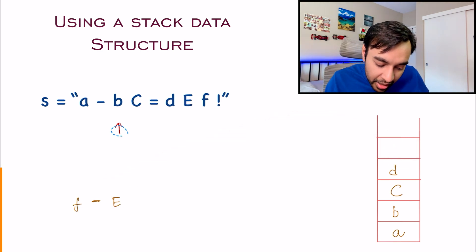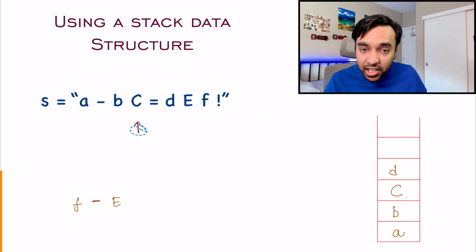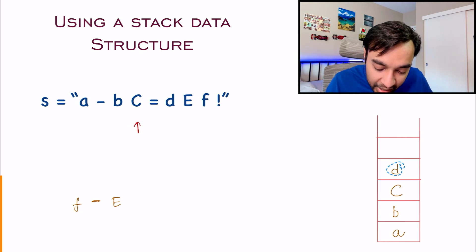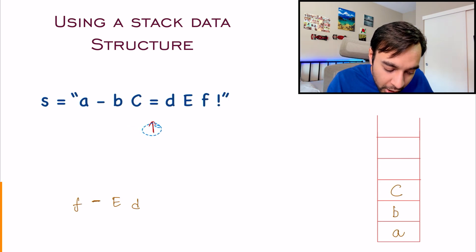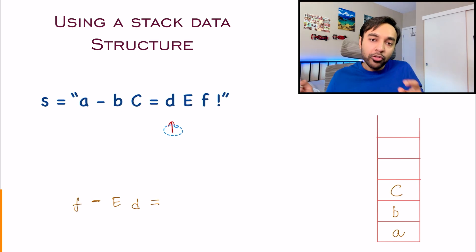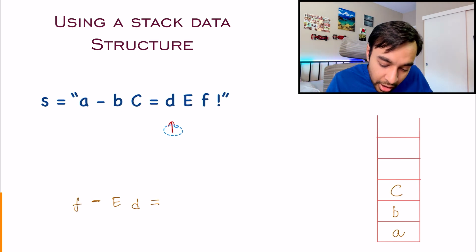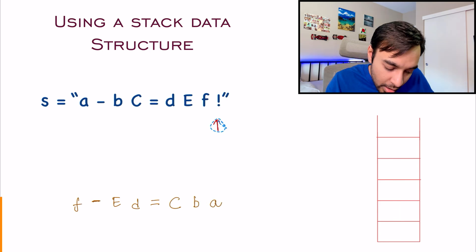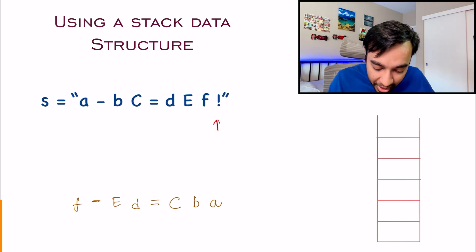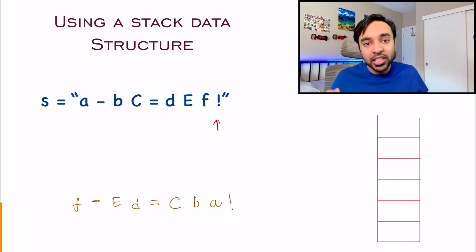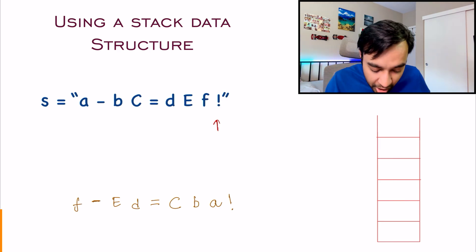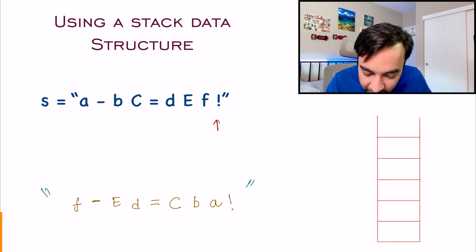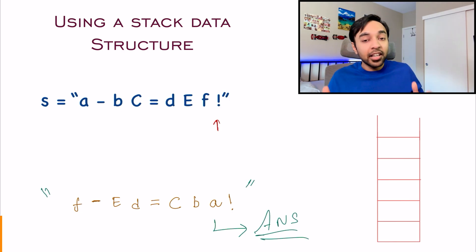Move one step ahead. Once again you have an English alphabet, so you will go in your stack and pop out a character. Move your pointer one step ahead — you get an equal sign, so simply copy it. Move ahead and you will get all of your remaining characters, so they get popped out one by one. For your last character, you have the exclamation mark and then you just copy it as it is. Using your stack data structure, you were able to reverse only the letters. And this, in fact, is your answer.